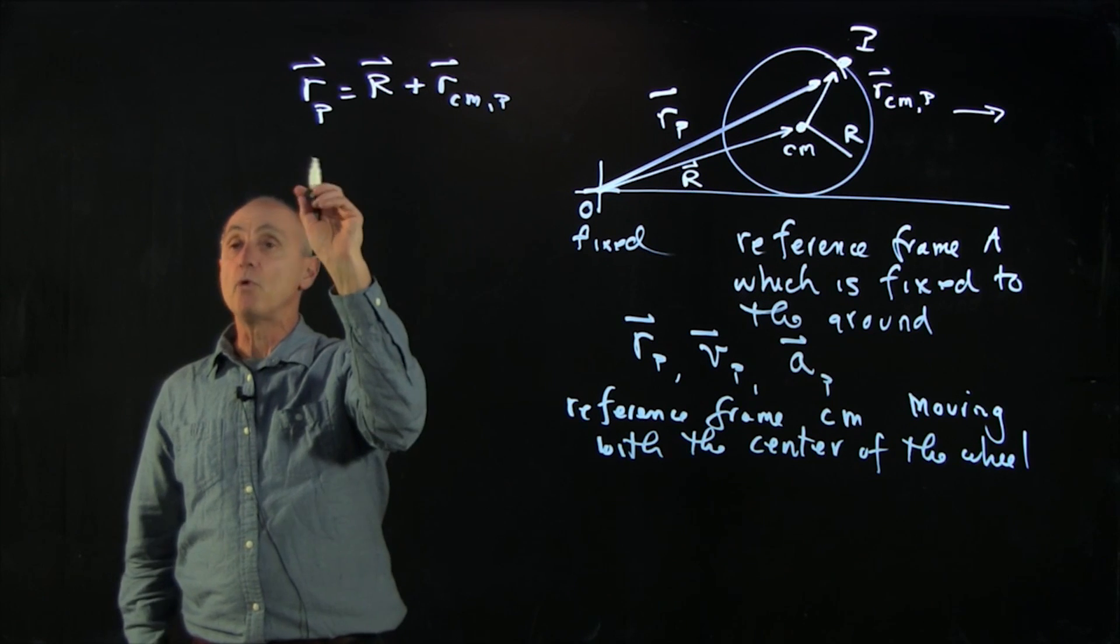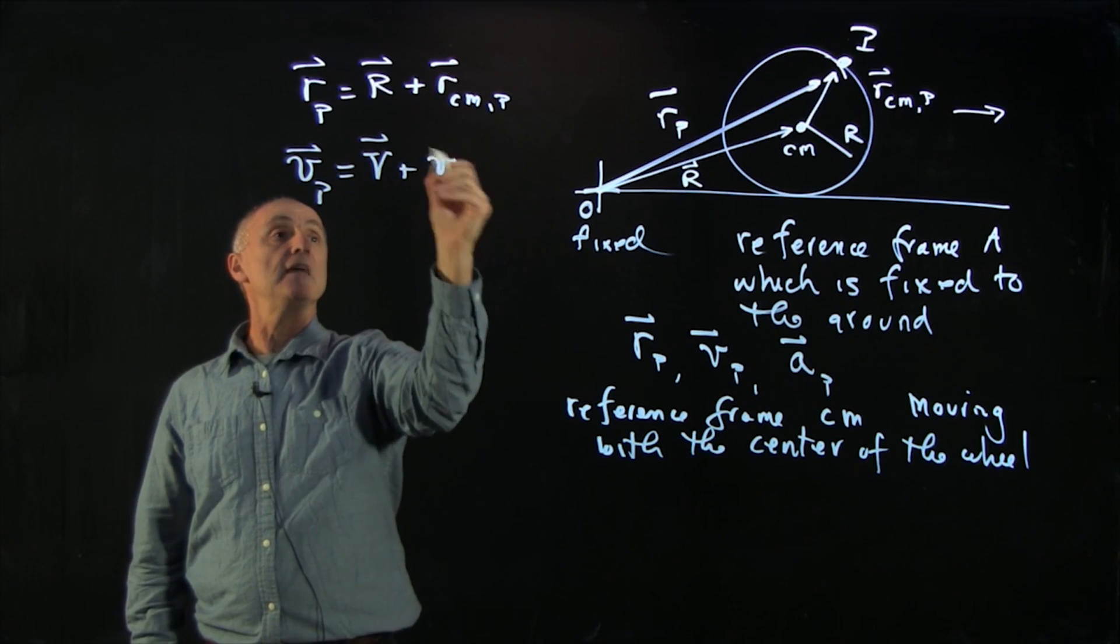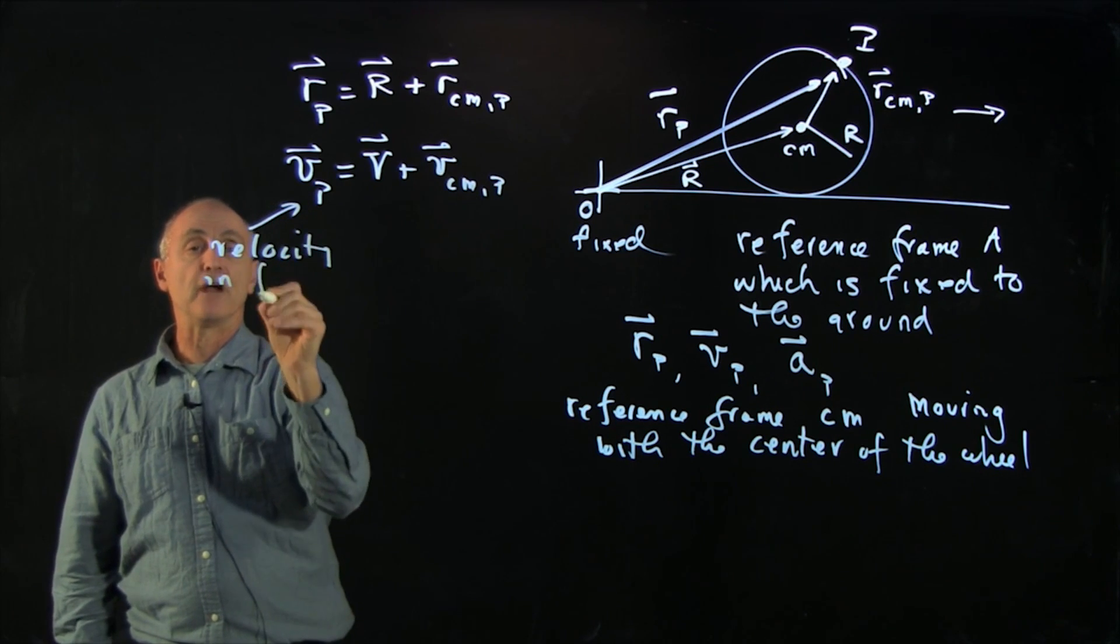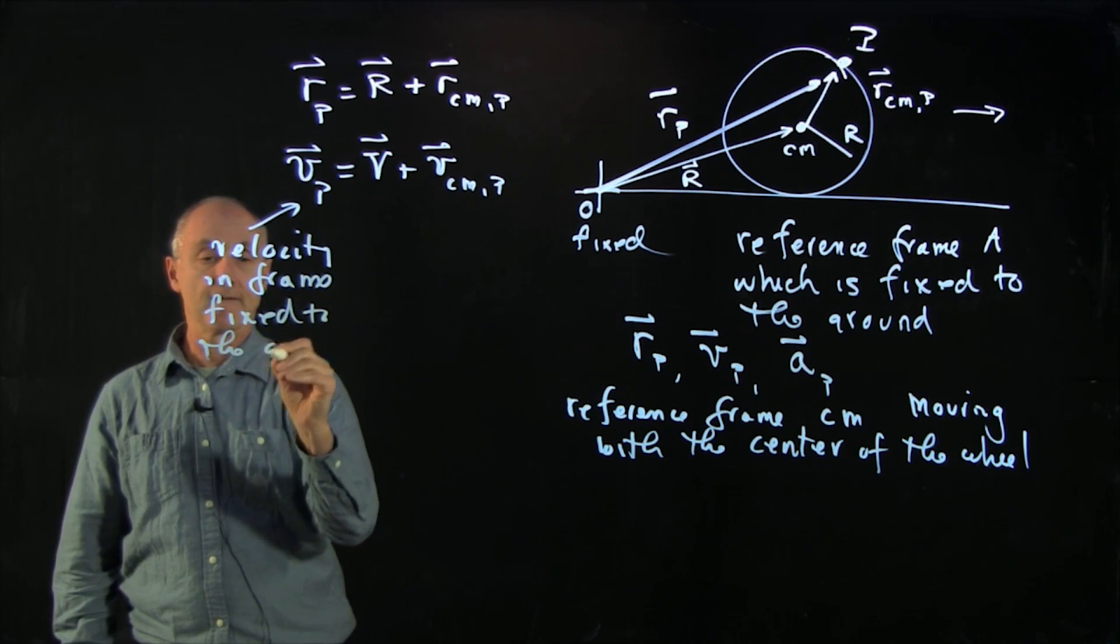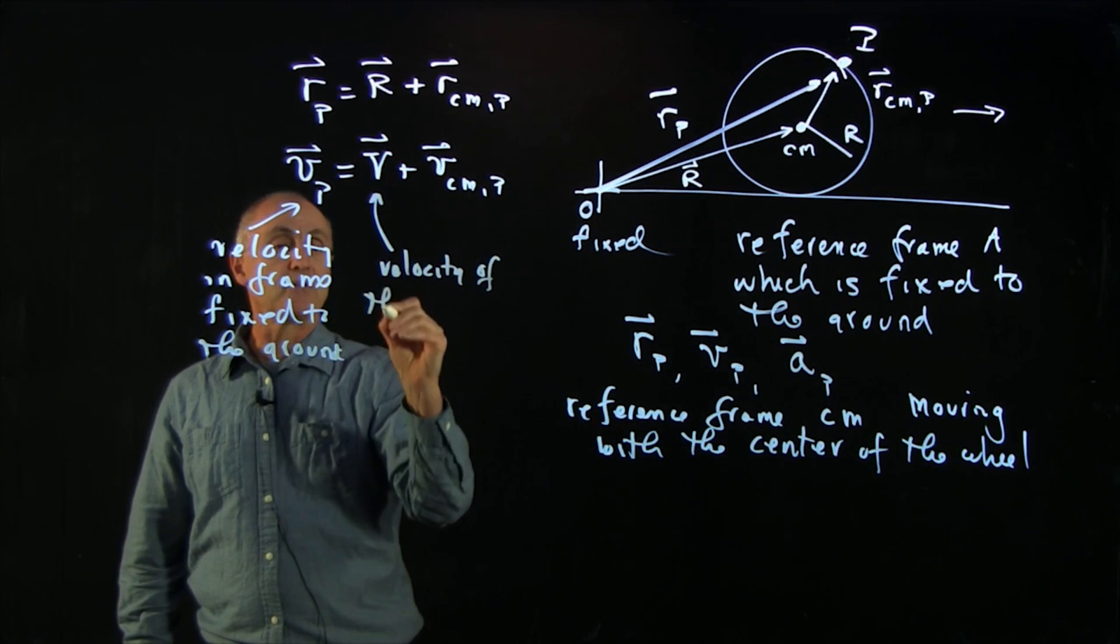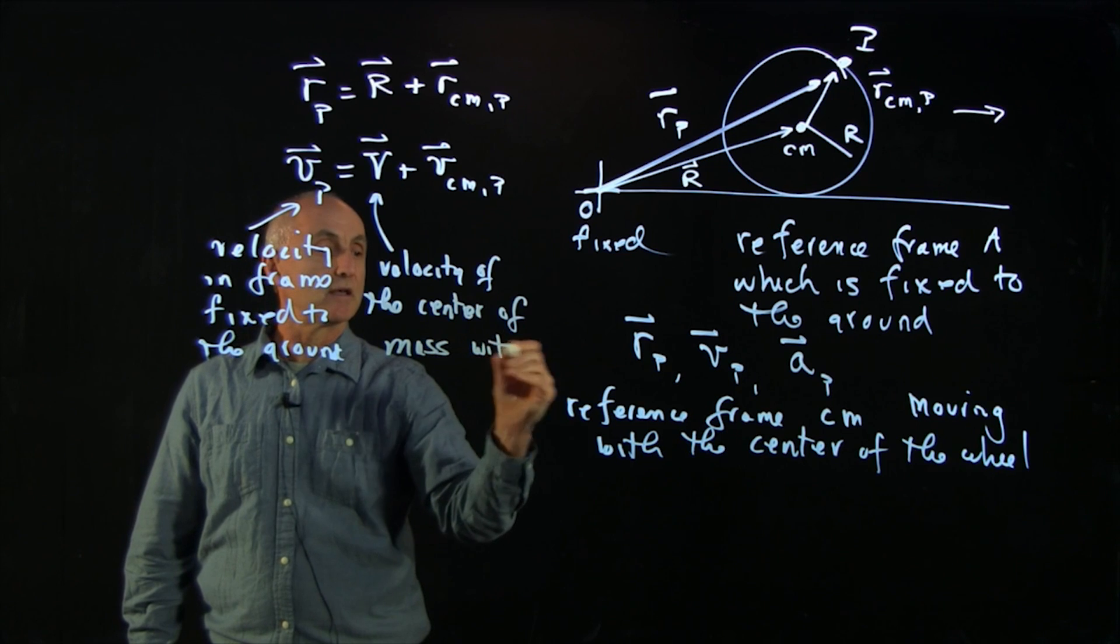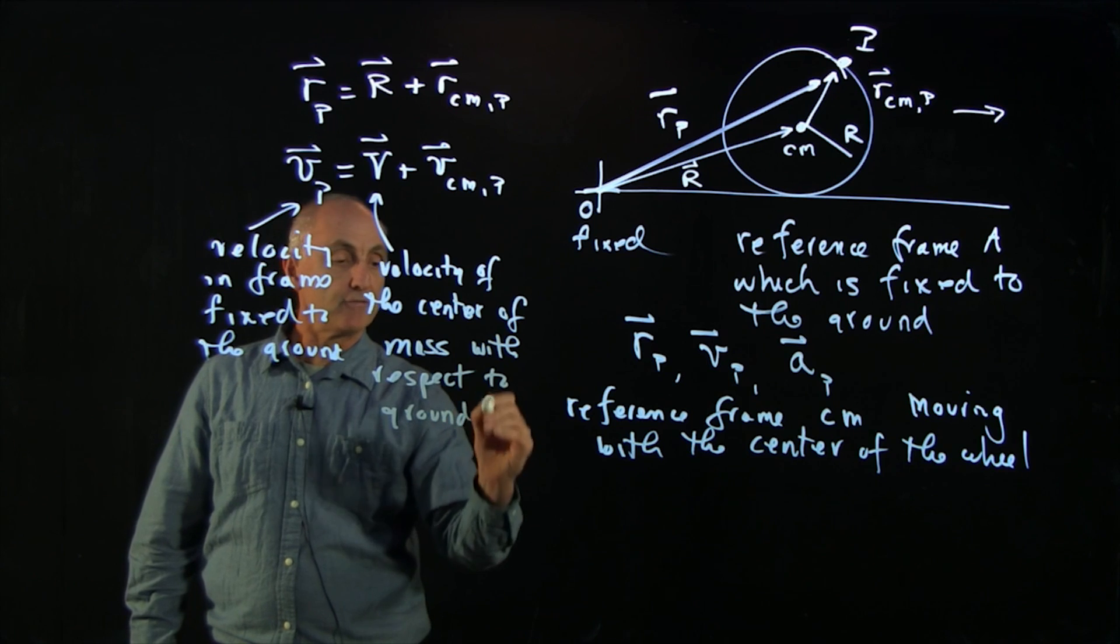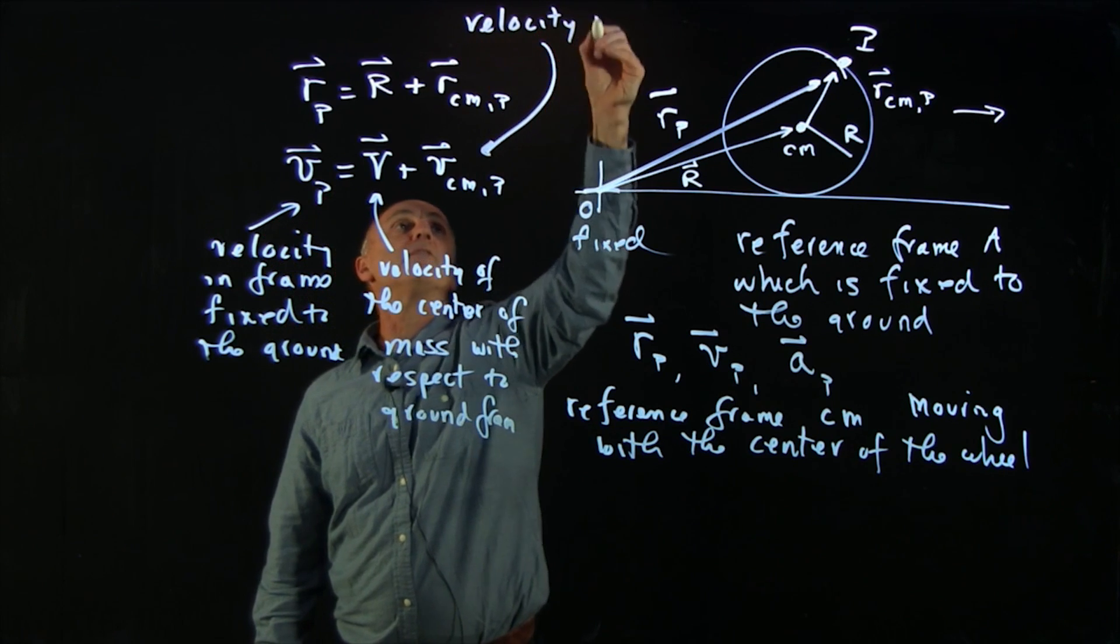Now, as we've seen before, by differentiating, the velocity of the particle is given by v plus v_Cm_p. This one is the velocity in frame fixed to the ground. And this is the velocity of the center of mass with respect to ground frame. And finally, v_Cm_p is the velocity in the center of mass frame.